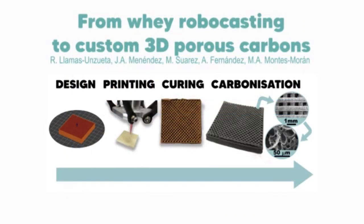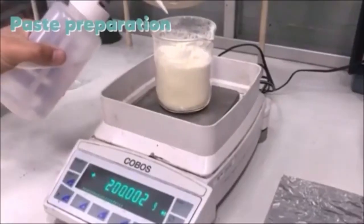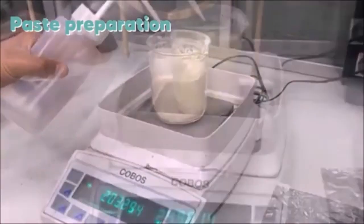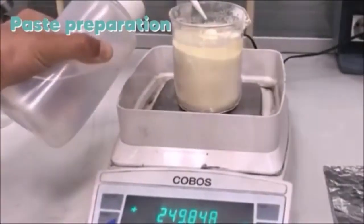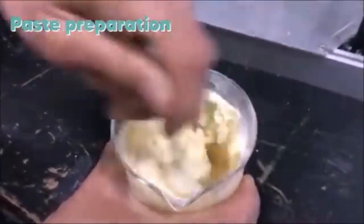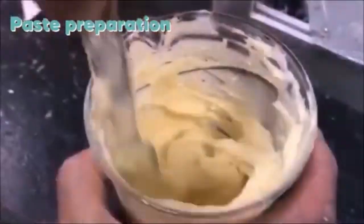A relatively simple printing device is used to manufacture these three-dimensional structures from the whey pastes. When heated, the whey pastes behave as thermoset polymers, retaining the original shape of the printed pieces upon carbonization.